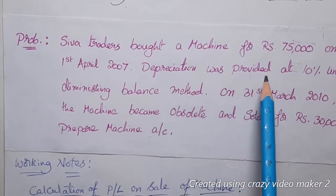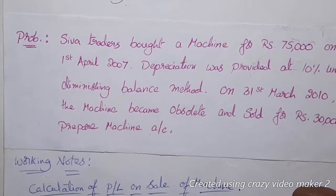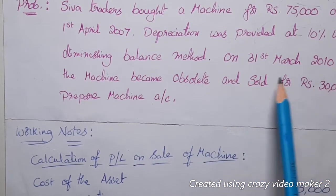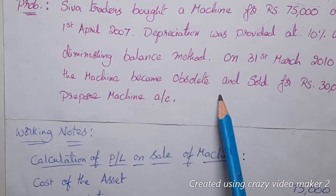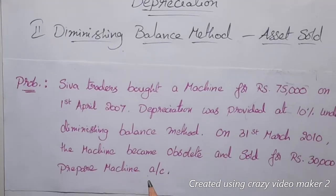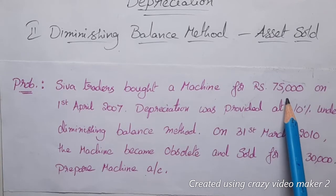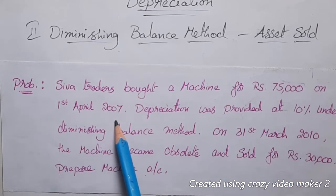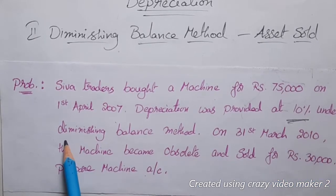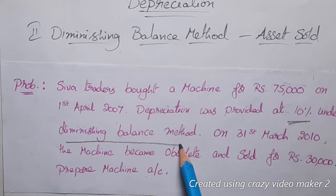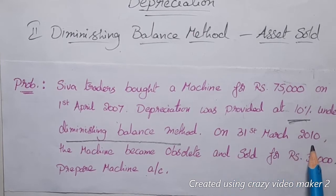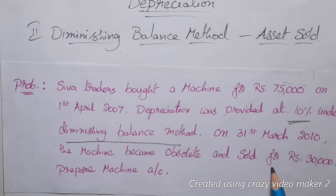Problem 2: Siwa Traders bought a machine for ₹75,000 on 1st April 2007. Depreciation was provided at 10% under the diminishing balance method. On 31st March 2010, the machine became obsolete and was sold for ₹30,000. Prepare the machine account.